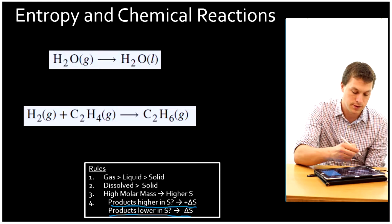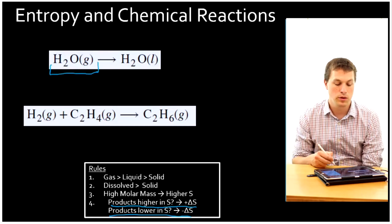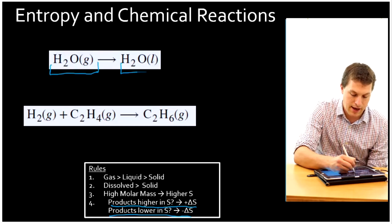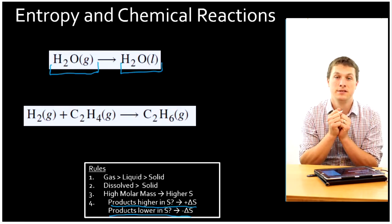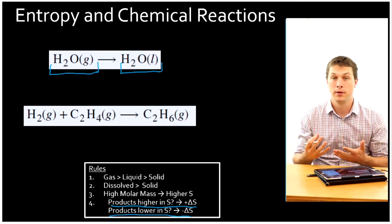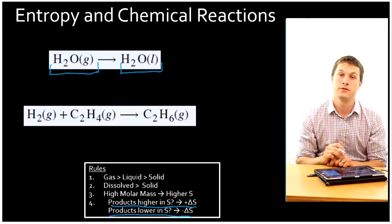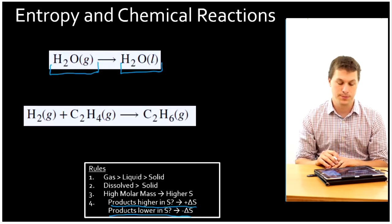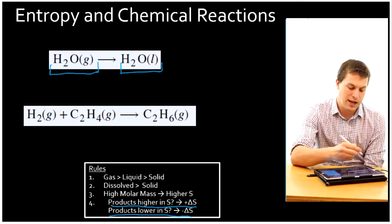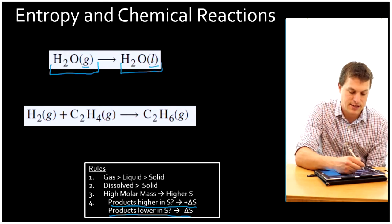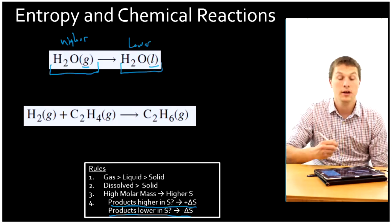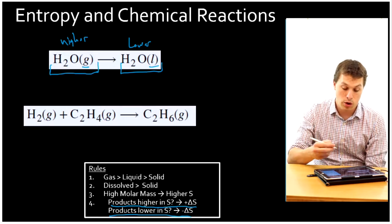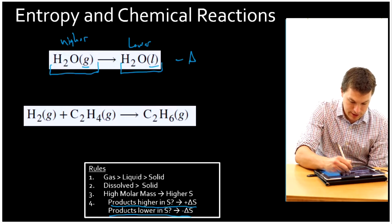Let's look at these two reactions. Here I have a gaseous molecule of water, and on this side I have a liquid molecule of water — my gaseous water has condensed. This is like what happens on the side of a cold cup on a humid day, called condensation. Gas is higher in entropy than liquid, so the reactant side is higher in entropy and the product side is lower. My products are lower in S, so this reaction has a negative delta S.